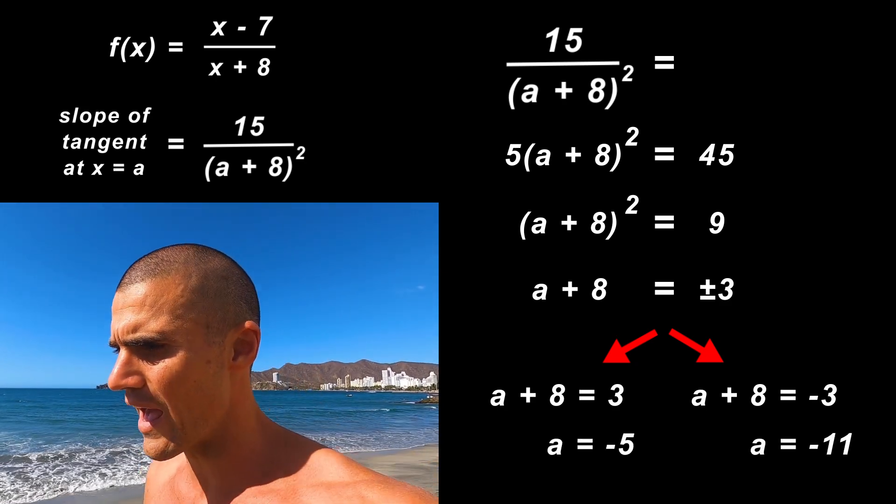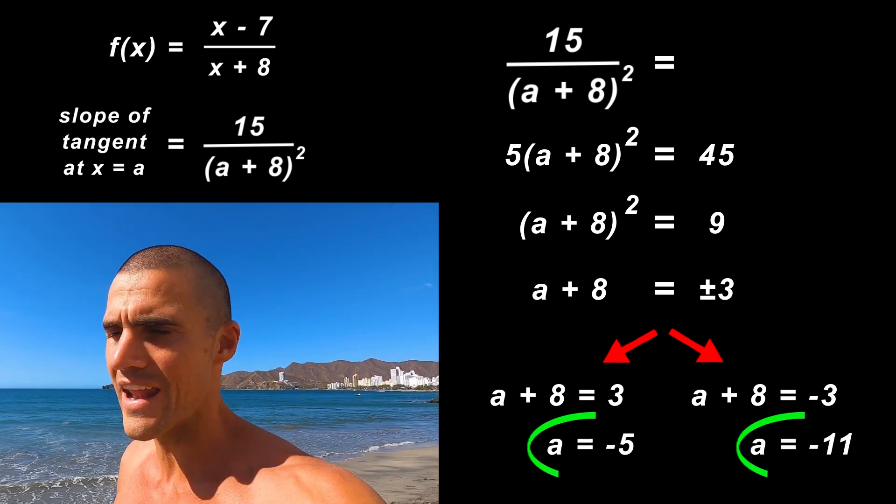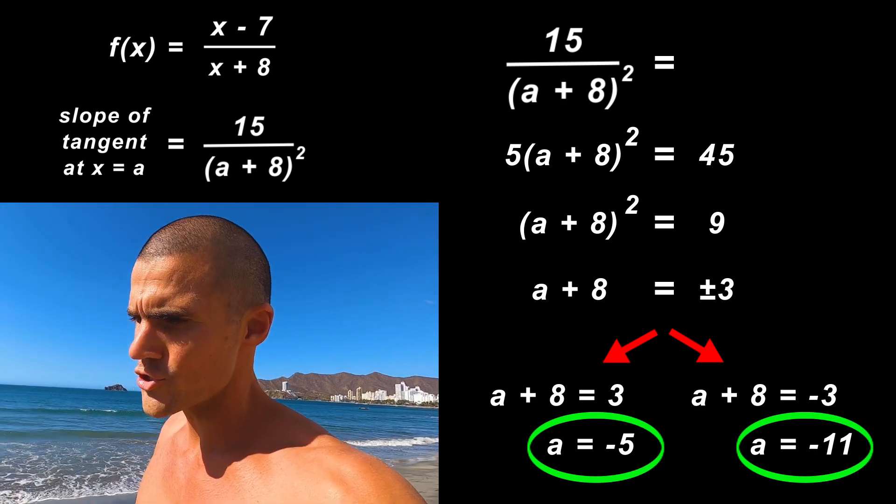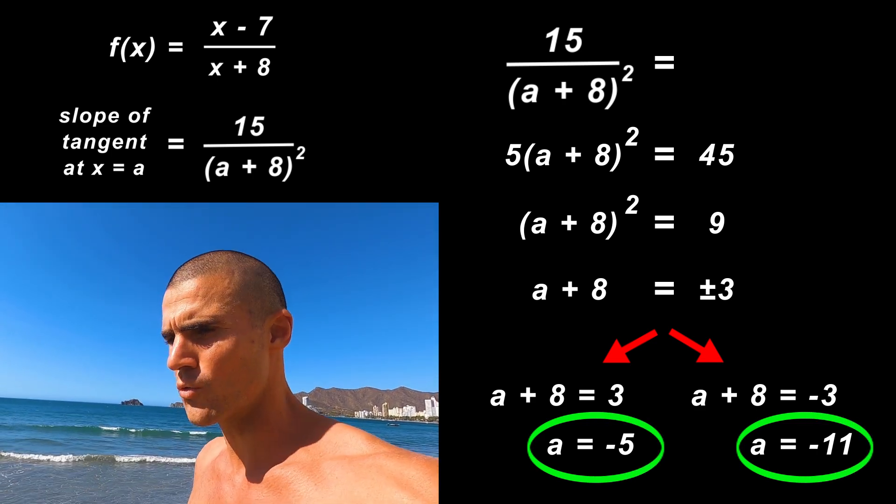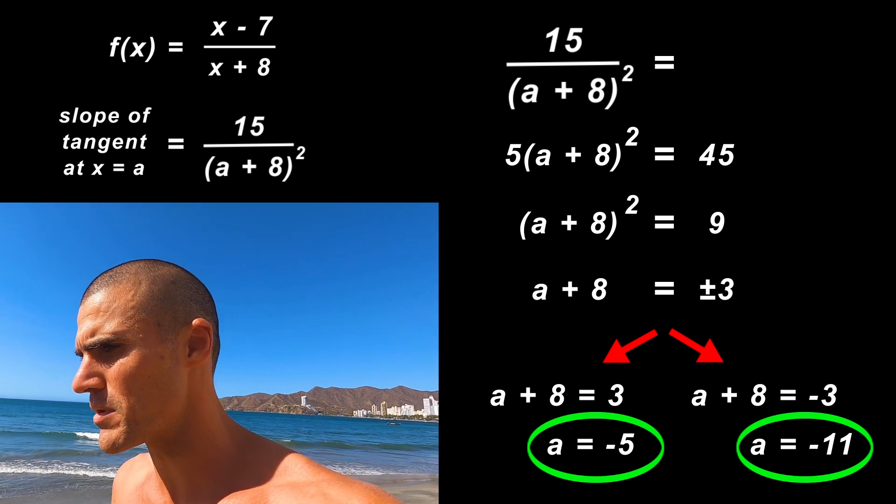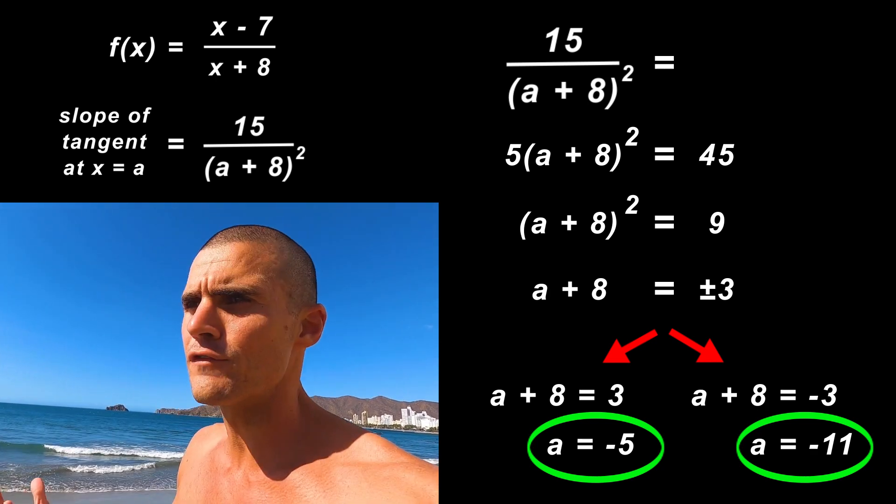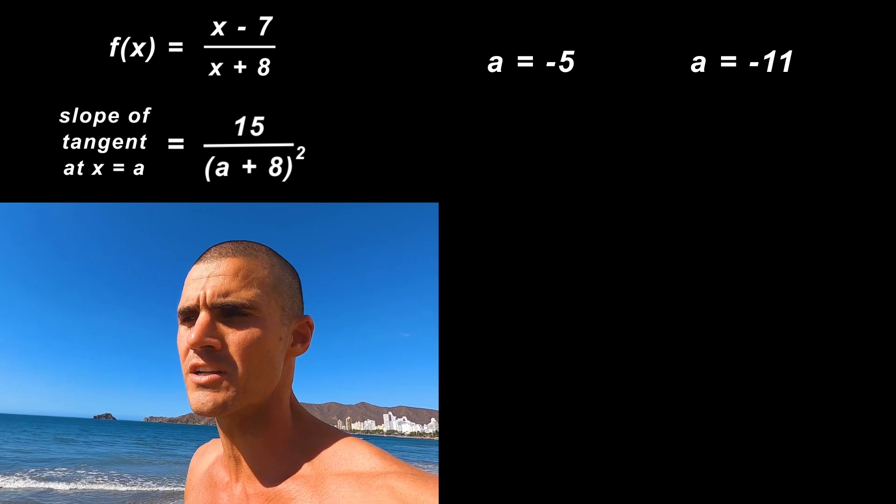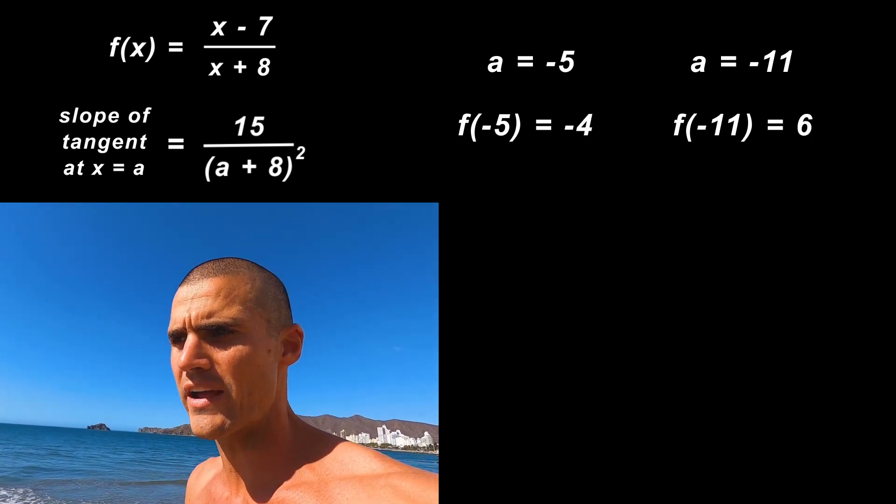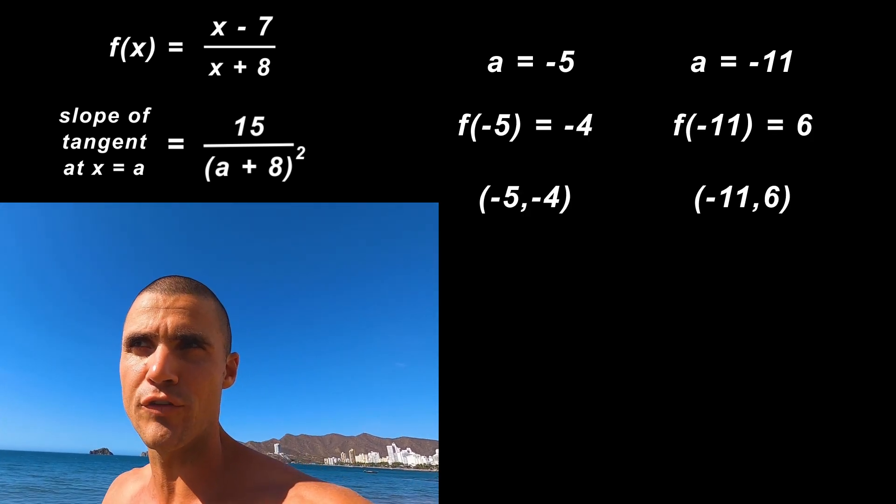So then there's going to be two cases: either (a+8) is going to equal positive 3, or (a+8) is going to equal negative 3. When you solve for those two a values, you would get -5 and -11. So those are the two x values on the function where the slope of the tangent is going to be 5/3. If you want to get the corresponding y values of the coordinates, you would just plug those two x values into the original function to get your corresponding y values.